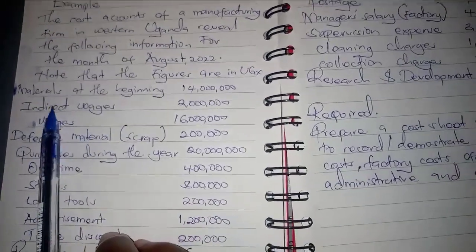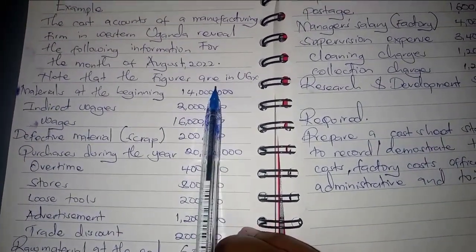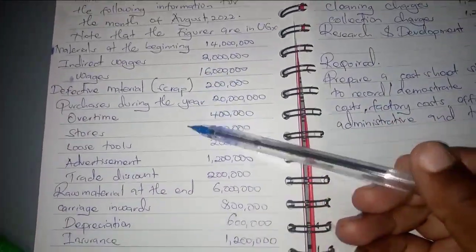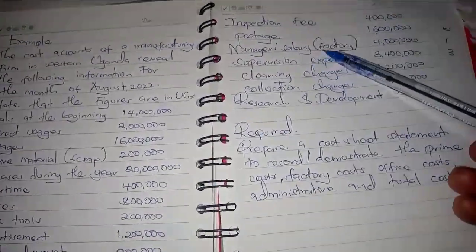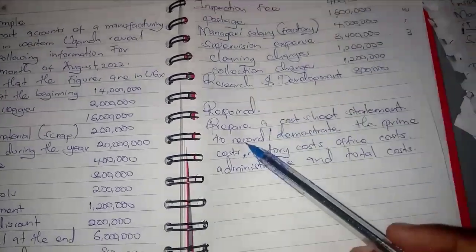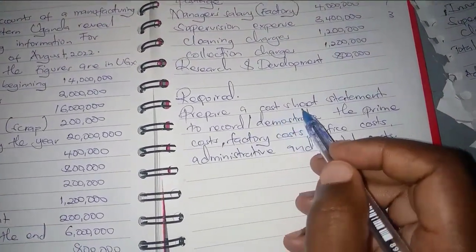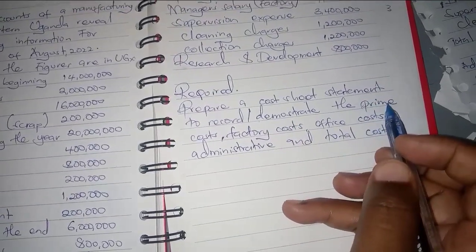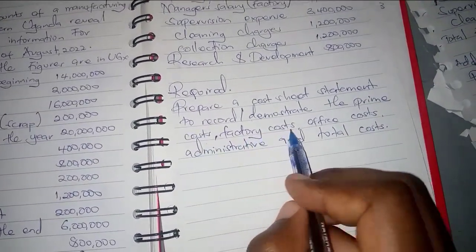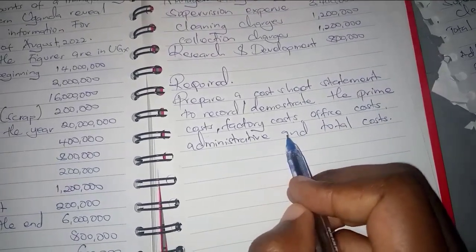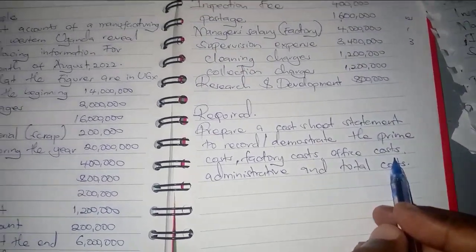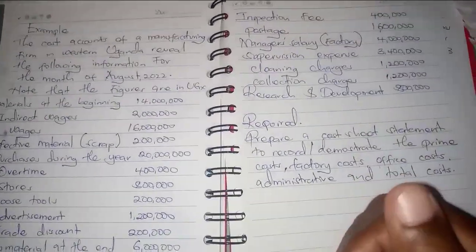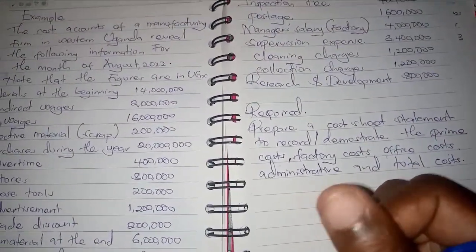We have materials at the beginning, indirect wages, and wages — these are the details we have in the question. They want us to prepare a cost sheet statement to record or demonstrate the prime costs, factory costs, office and administration costs, and then the total costs. So they want us to prepare the cost sheet using this information.